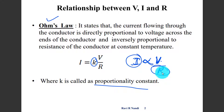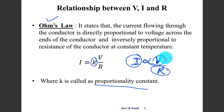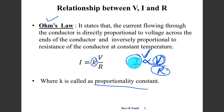The resistance is in the denominator and current is in the numerator. As the voltage increases, the current also increases — this is a direct relationship. Voltage is directly proportional to current and inversely proportional to R.